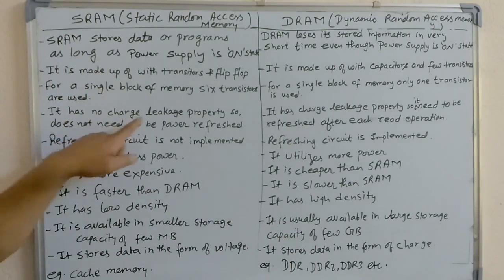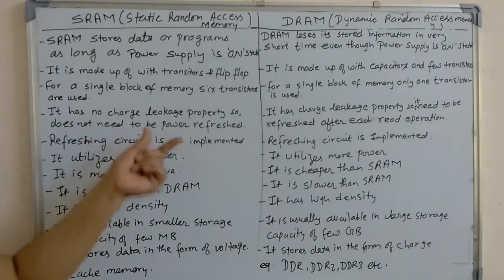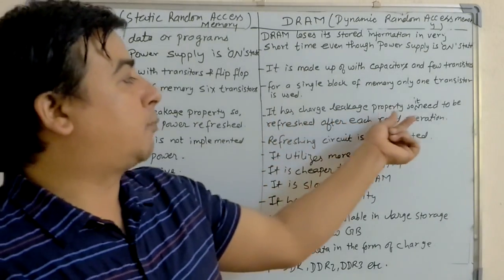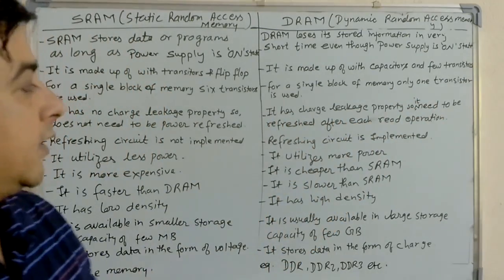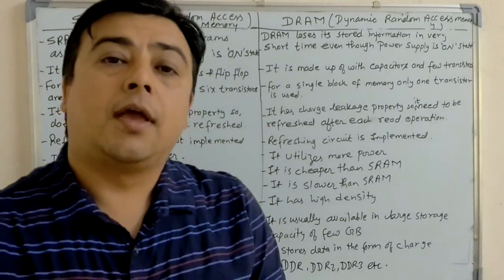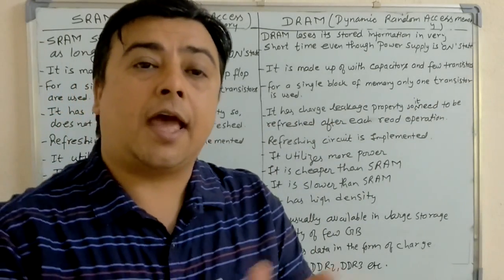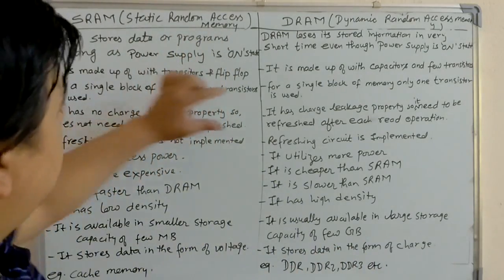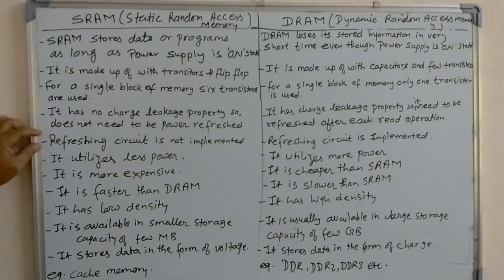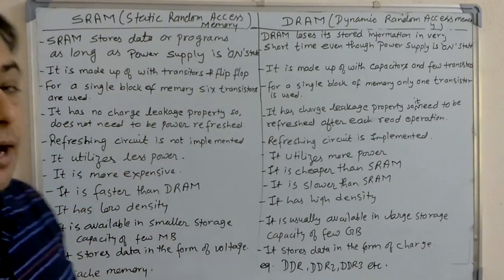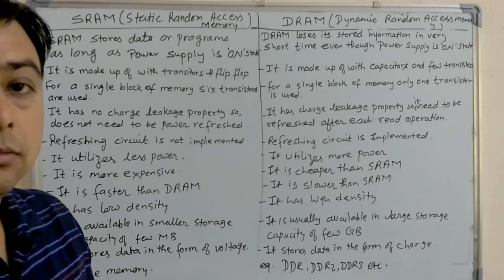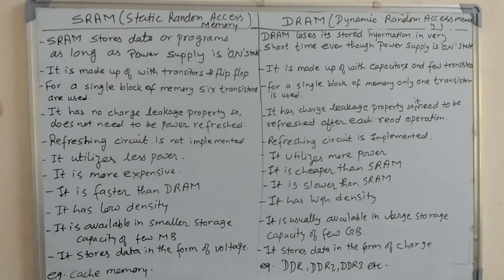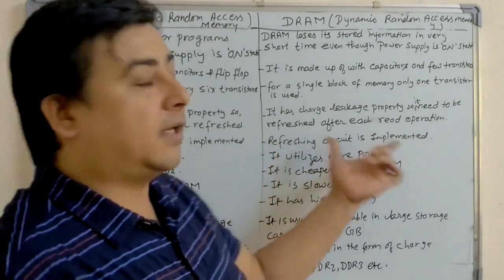SRAM has no charge leakage property, so it does not need to be power refreshed. DRAM has charge leakage property, so it needs to be refreshed after each read operation. Therefore, SRAM does not need a refreshing circuit, but DRAM needs a refreshing circuit.